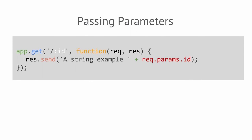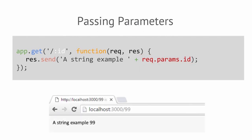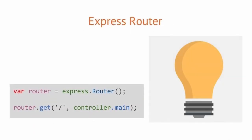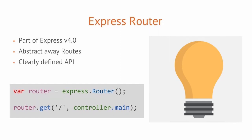We're able to use the params method of the request object to retrieve available parameters from an HTTP request. In the example below, we pass the 99 parameter from the URL and use it to display in a string message. This time, we're using the send method to display a string and attaching it to the parameter's request object. Express 4 brought us the router API. By using router, we're able to use the same GET, PUT, POST, and DELETE verbiage while being able to easily extract away the location of our routes.